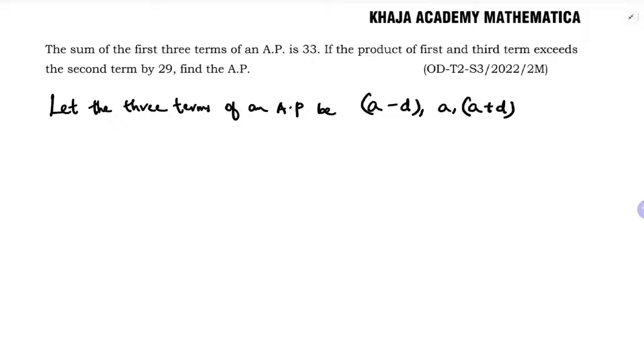So here sum is 33. a minus d plus a plus a plus d equals 33. Here minus d plus d cancel, so three times a is 33. Therefore a is 33 by 3, so a value is 11.